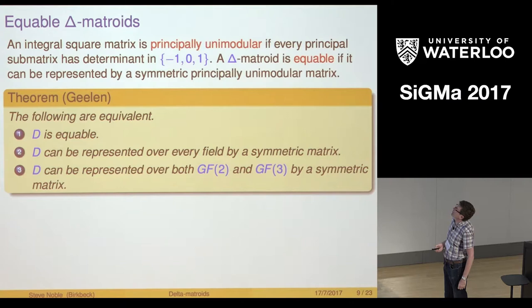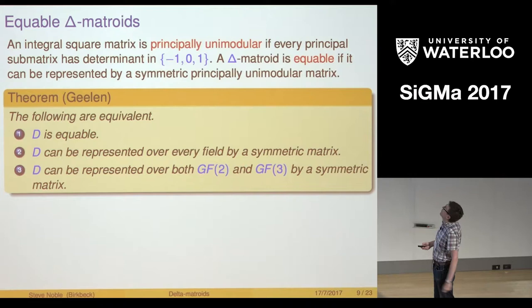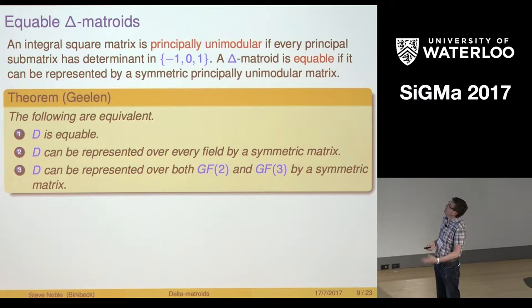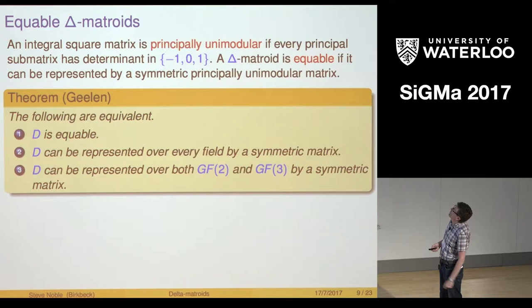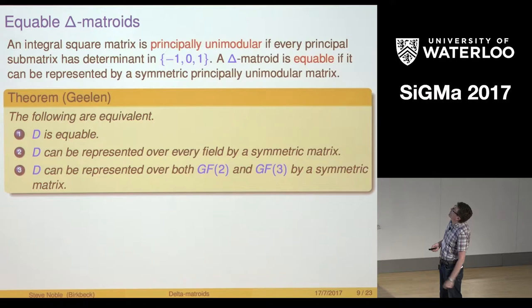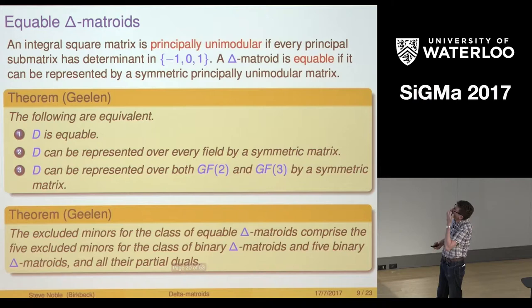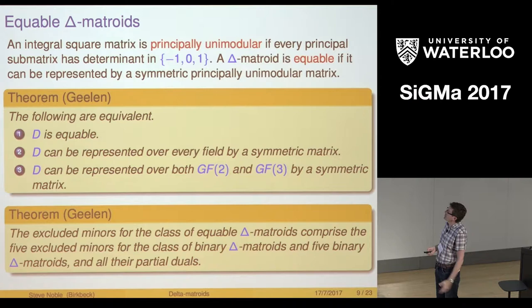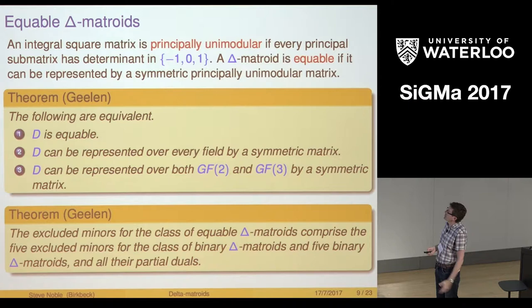Jim had two theorems on this. This first one is very similar to a result for regular Matroids. These three conditions are equivalent: they're equitable or they can be represented over every field by a symmetric matrix or they can be represented over both GF2 and GF3 by a symmetric matrix. We also have the excluded minors for being equitable. They're the five excluded minors that I showed you for binary Delta Matroids and another five binary Delta Matroids including the Fano and all their partial duals.